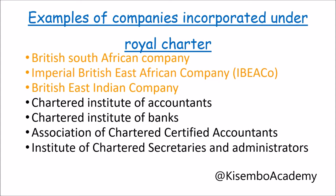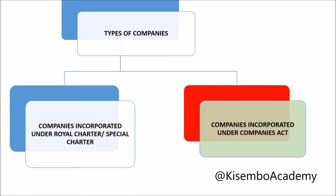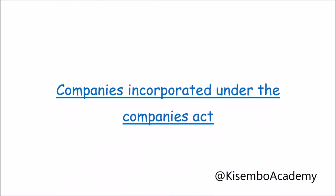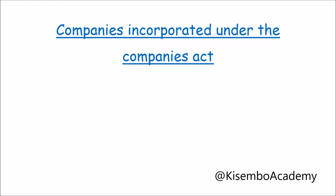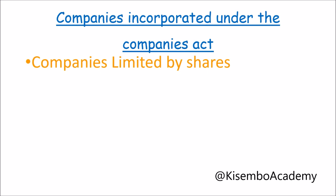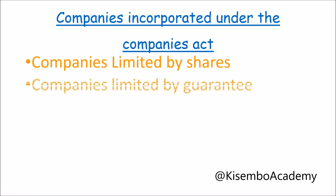Then we have companies incorporated under the Companies Act. In Uganda, the Companies Act lays down procedures by which a company may be brought into existence, and the majority of companies fall under this category. These companies lie under three broad categories: companies limited by shares, companies limited by guarantee, and unlimited companies.